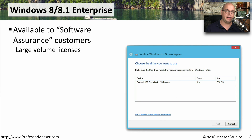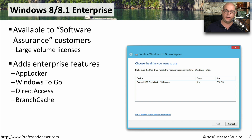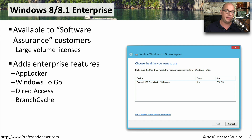The Enterprise edition of Windows 8 is designed for volume license customers that Microsoft calls their Software Assurance customers. It includes a number of features useful to the enterprise, such as AppLocker, which controls the use or execution of different applications in Windows. You also have Windows To Go, which allows you to boot Windows from a USB-connected drive; Direct Access, which is useful for VPN connectivity; and BranchCache, which is intelligent file sharing, especially over slower WAN links.